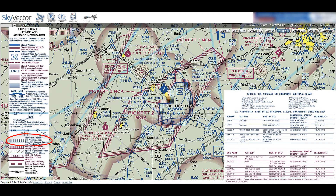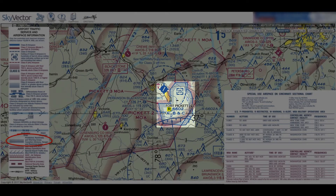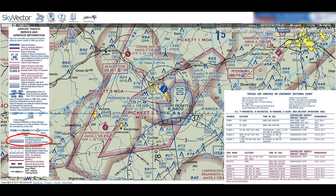Next are restricted areas, which are also marked with the same symbology as prohibited areas. Restricted areas are differentiated by the R at the beginning of their area ID. Restricted areas are similar to prohibited areas with the exception that they have active and inactive periods. When a restricted area is inactive, it's perfectly legal to fly in it. To find the times and altitudes the restricted areas are effective for, check the special use airspace table.